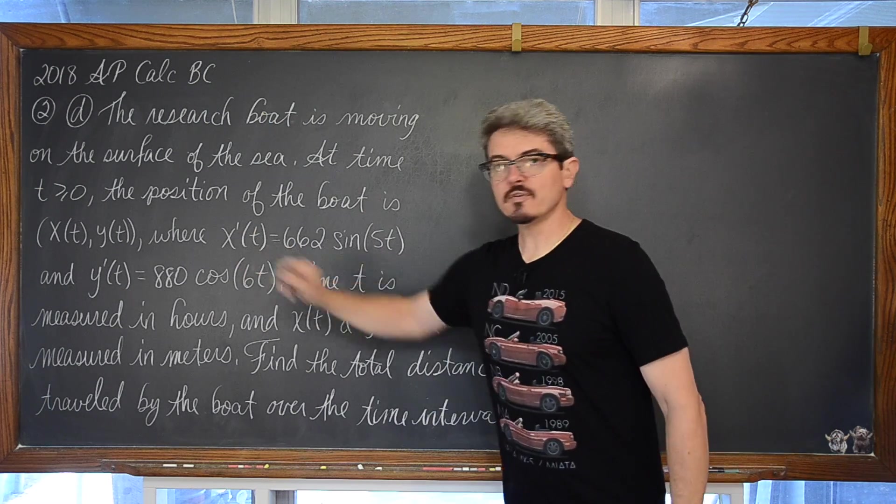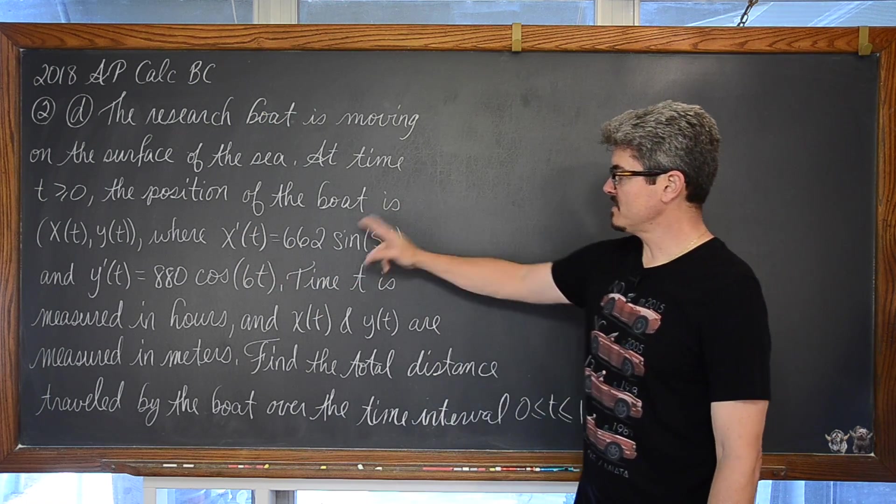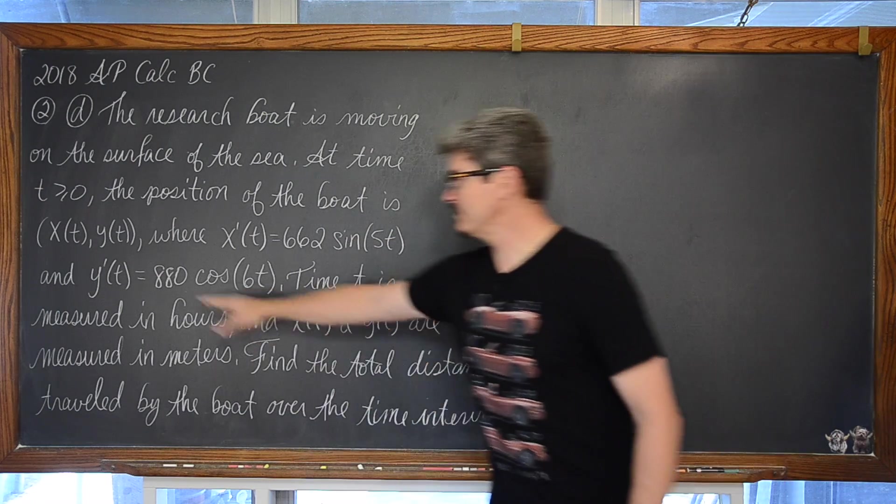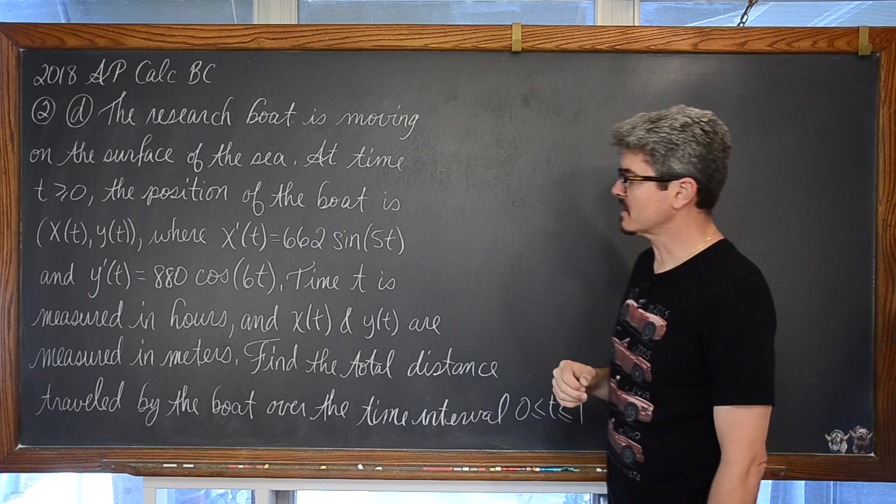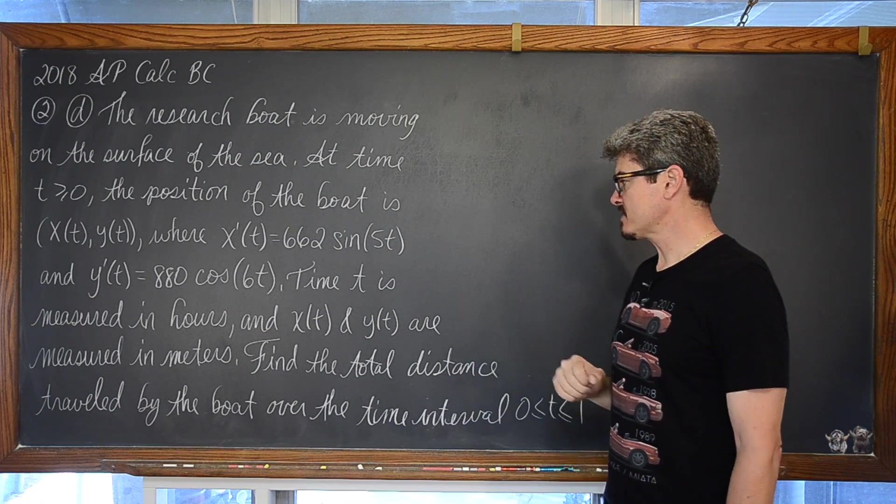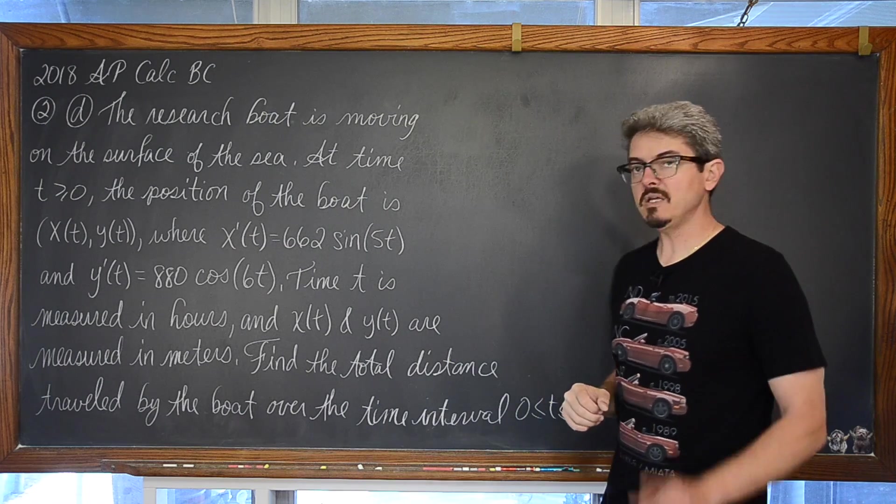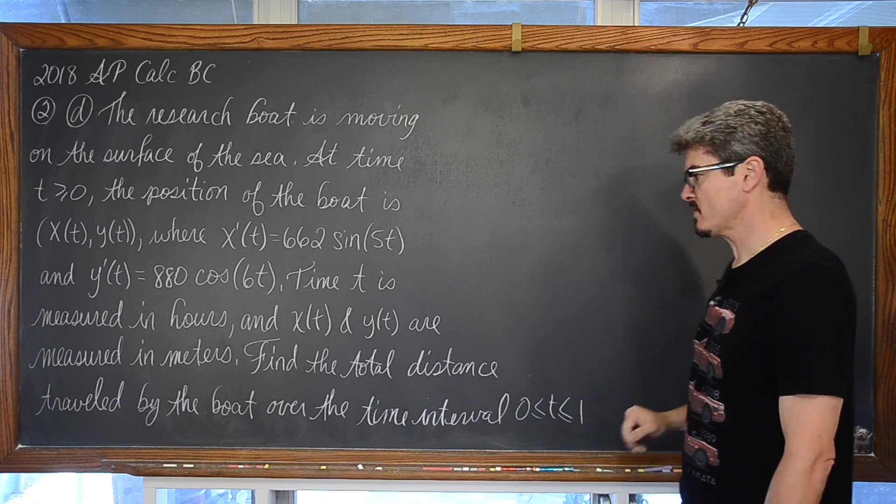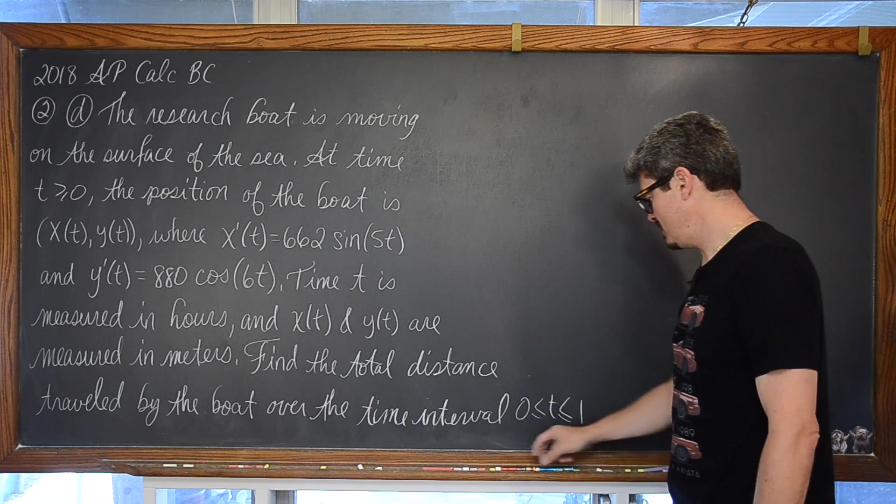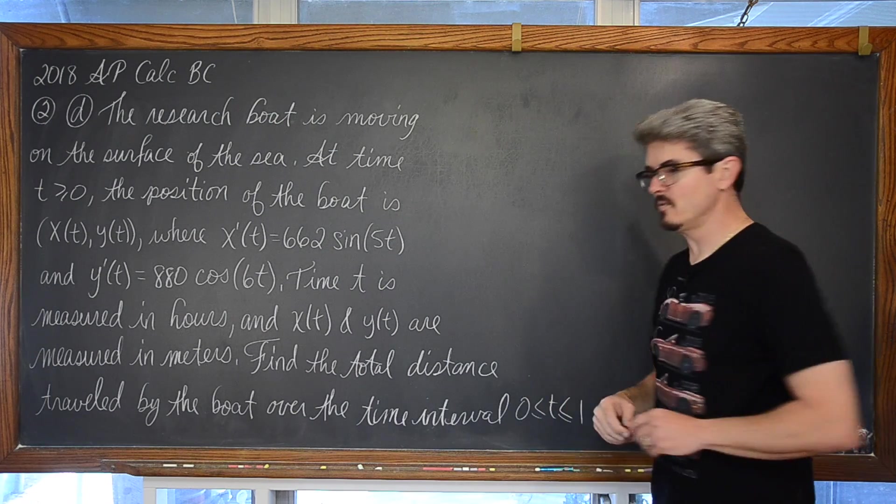Where the derivative of x of t is equal to 662 times the sine of 5t, and y prime of t is equal to 880 times the cosine of 6t. Time t is measured in hours, and x of t and y of t are measured in meters. Find the total distance traveled by the boat over the time interval,